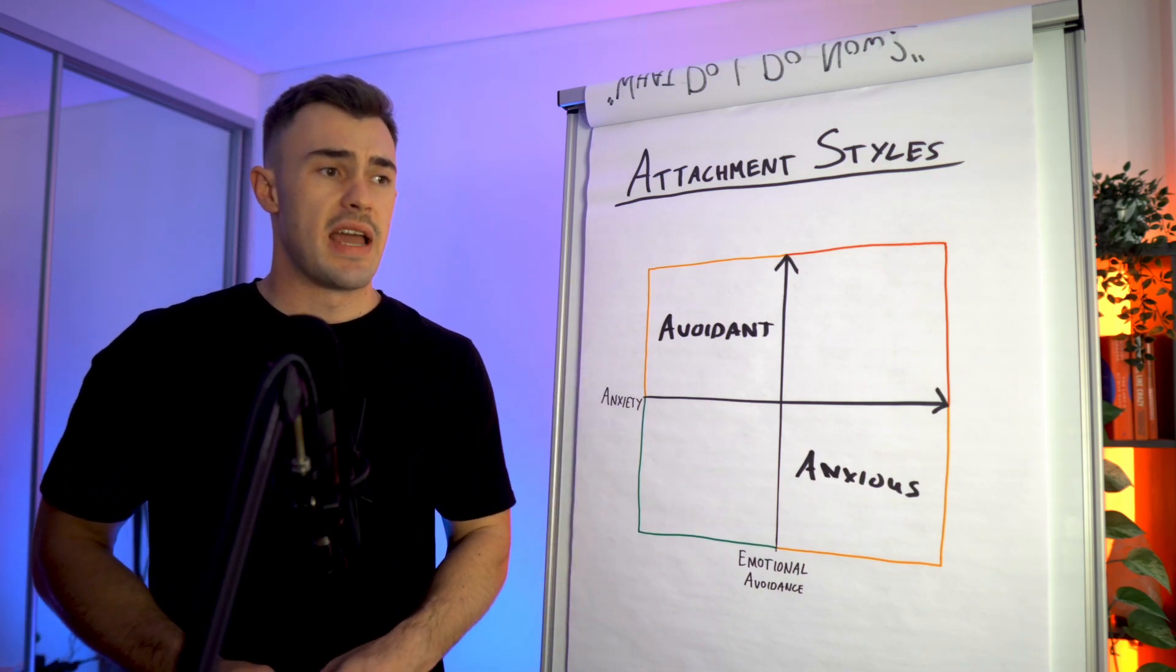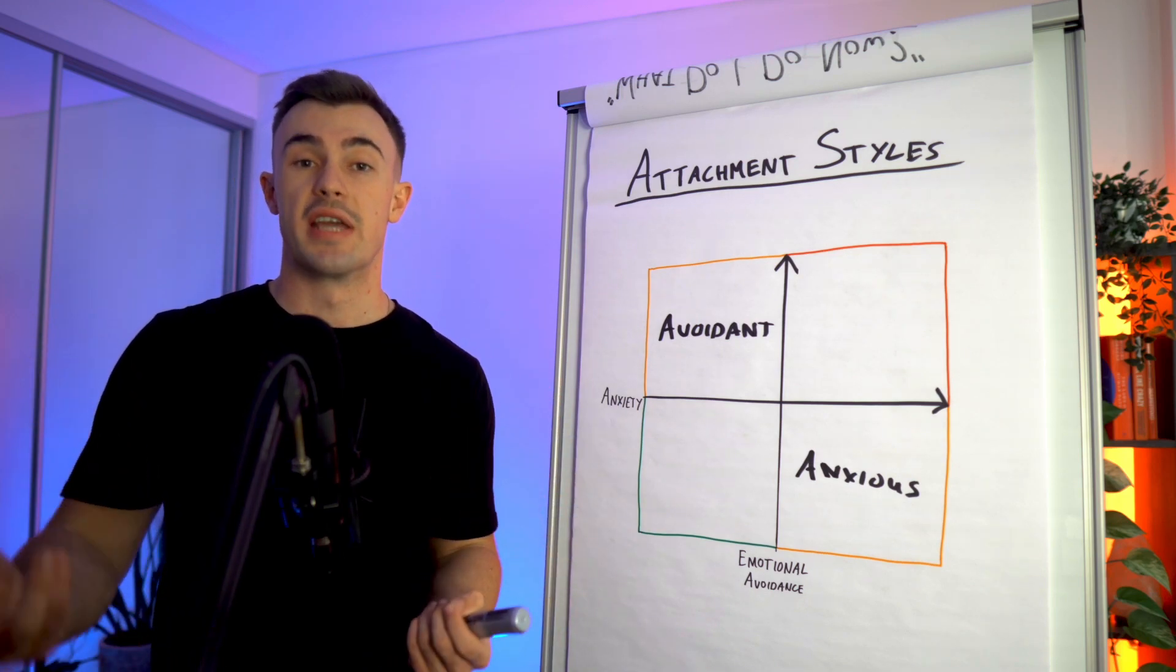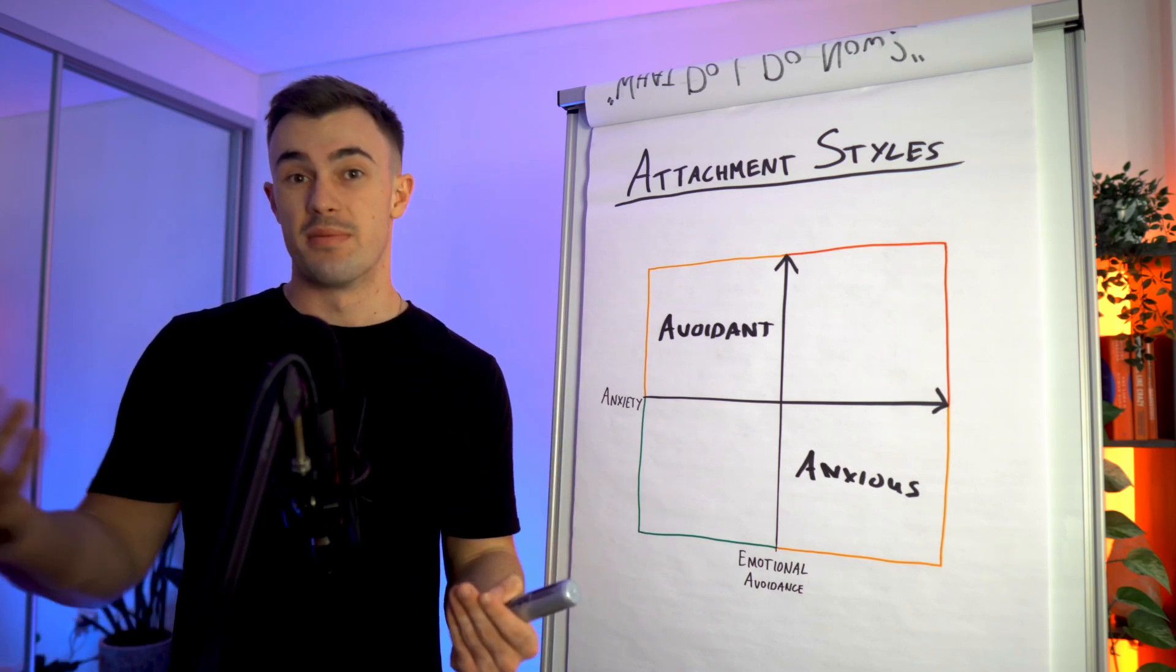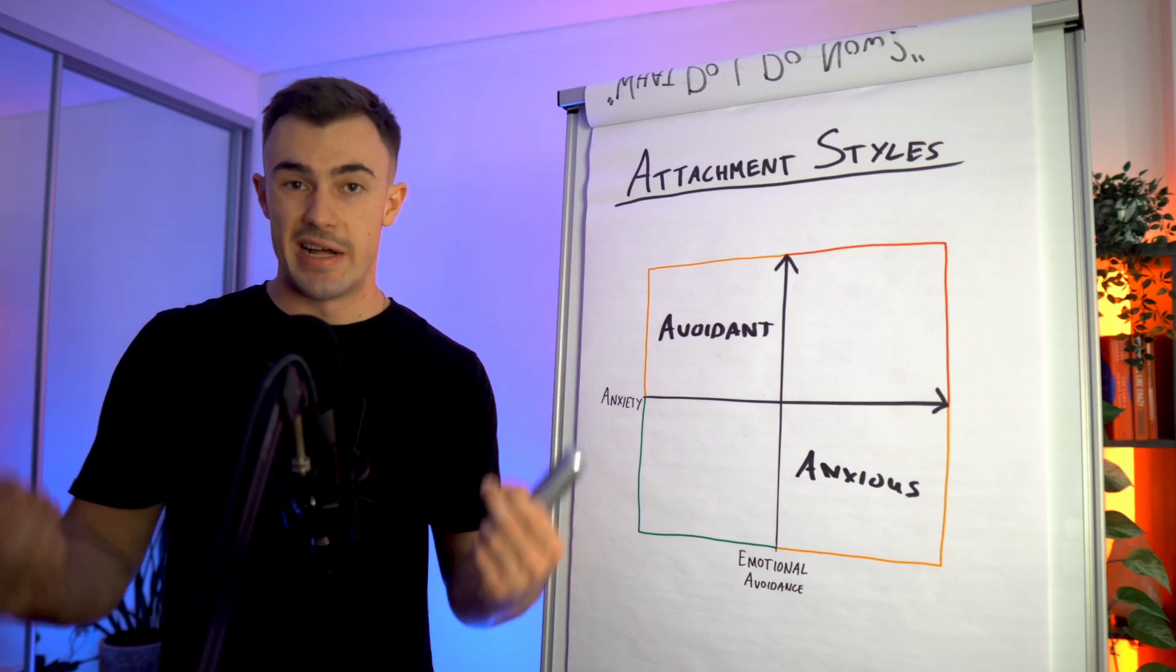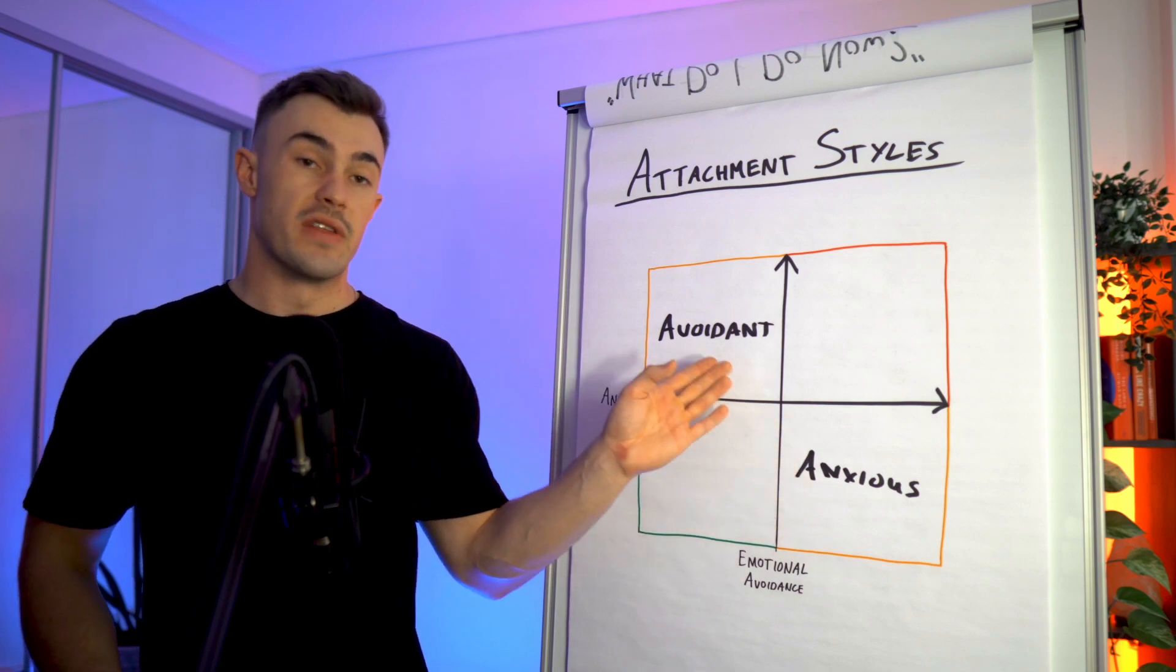So avoidant types can be the types who shut down in arguments. They don't know how to communicate their emotions properly. They can be dismissive of the other person's emotions. And ultimately they don't have a lot of emotional intelligence and empathy when it comes to their relationships, all of which are strengths for the anxious types.